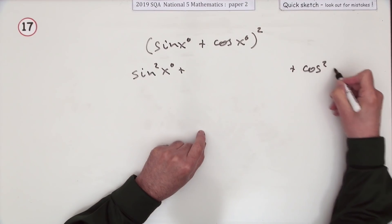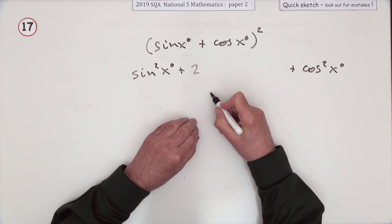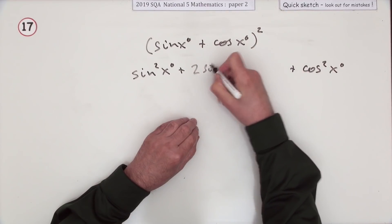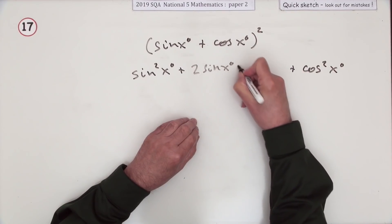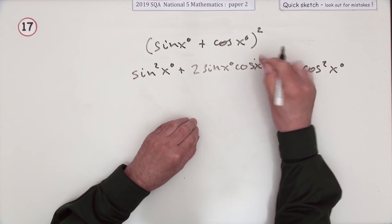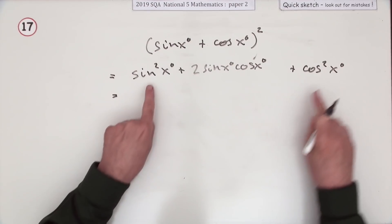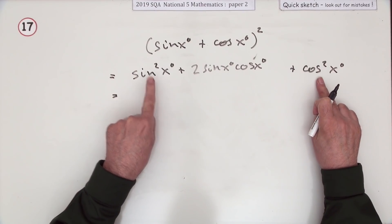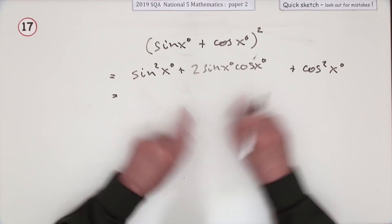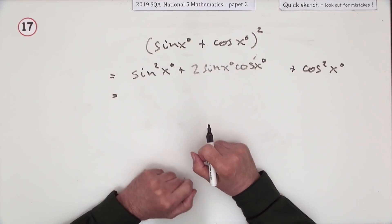And then twice the product is 2 sine x cos x. So that's it expanded. Now simplifying: sine squared and cos squared makes 1.